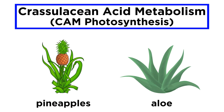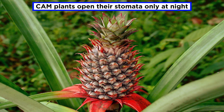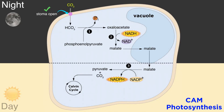Another alternate method of carbon fixation developed by plants like pineapples and aloe in arid environments is called crassulacean acid metabolism, or CAM photosynthesis. Plants that use CAM photosynthesis are especially adapted to extremely arid environments. Unlike most C3 and C4 plants, CAM plants conserve water by opening their stomata and admitting CO2 only at night. When the CO2 enters the leaves, it is fixed into a four-carbon compound through a PEP reaction similar to C4 plants. However, unlike C4 plants, in CAM plants the resulting organic acids are stored in vacuoles for later use.